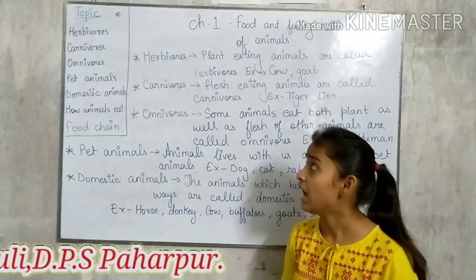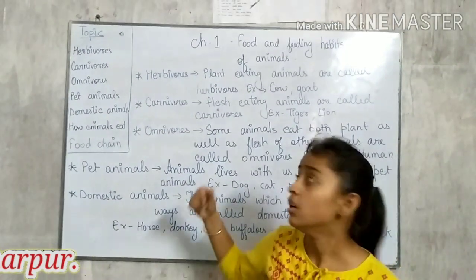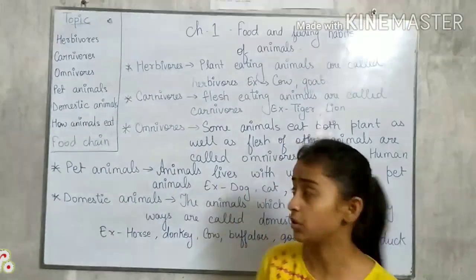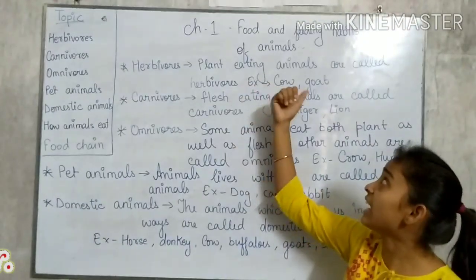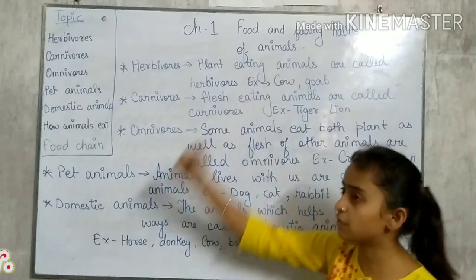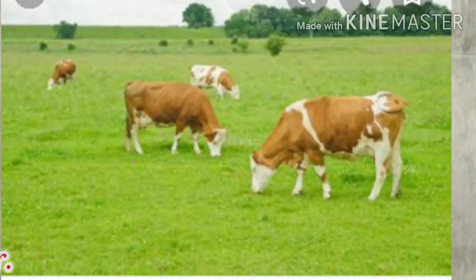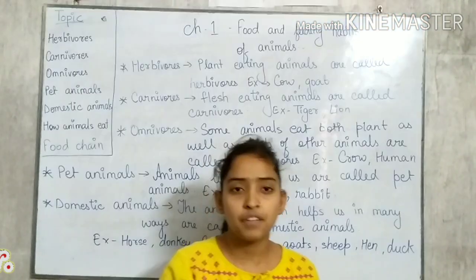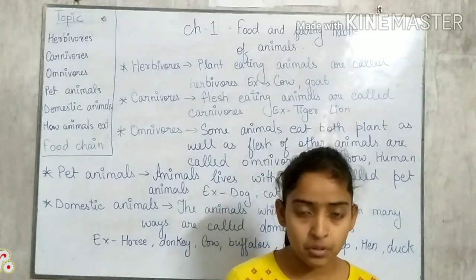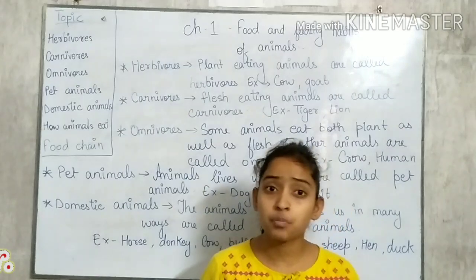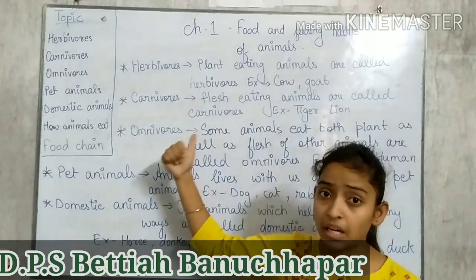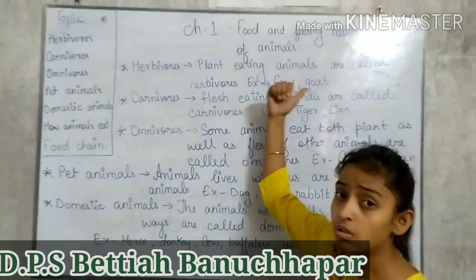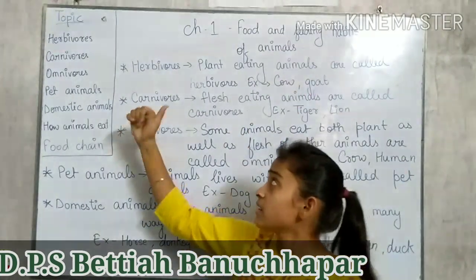First, I am going to give you the definition of Herbivores. What are Herbivores? Plants-eating animals are called Herbivores. The animals which eat only plants — they don't prefer flesh of any other animals. They only depend on plants. Examples: Cow and Goat.